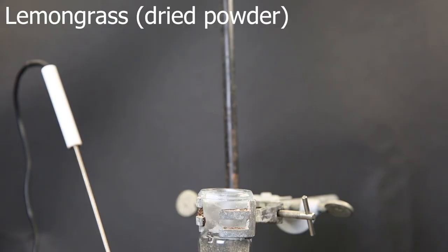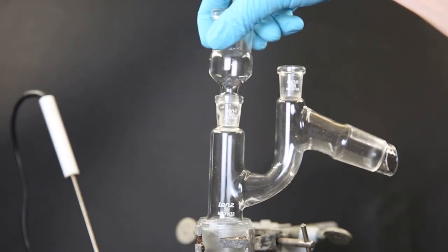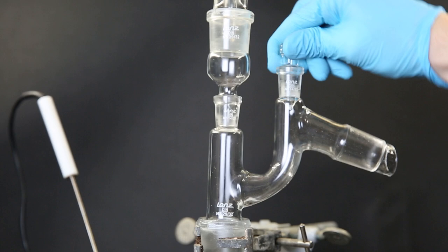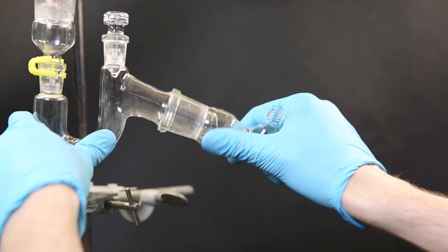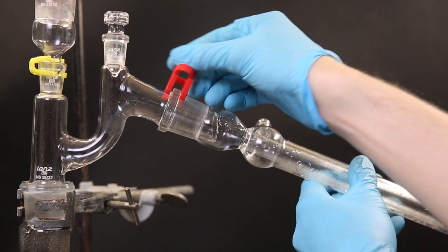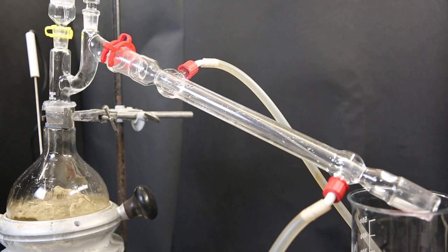I then start building a simple steam distillation setup. I add a Klysen adapter on top. On the left, I add an adapter with a dropping funnel that contains water. And on the right, I simply add a stopper. Then I attach a condenser that leads into a beaker. Now I can start the steam distillation. So to start it off, I add in water from the dropping funnel and heat the flask so that the water begins to boil.